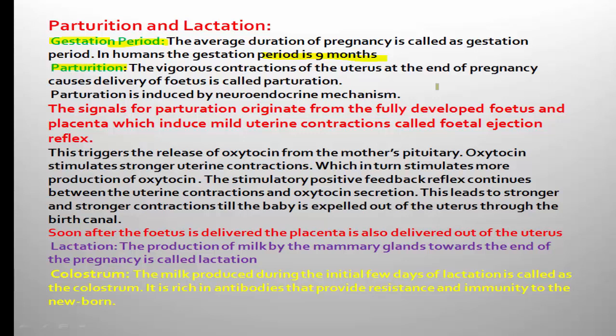Delivery of the fetus from the mother's uterus is called parturition. Parturition is due to vigorous contraction of the uterus, which occurs at the end of pregnancy. Parturition is induced by a neuro-endocrine mechanism.